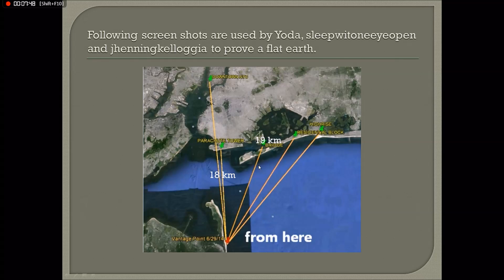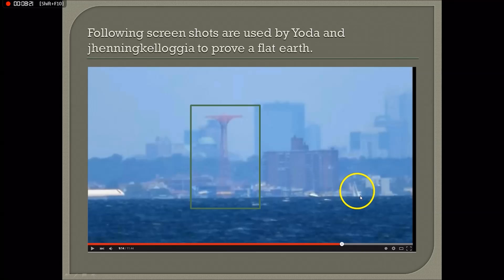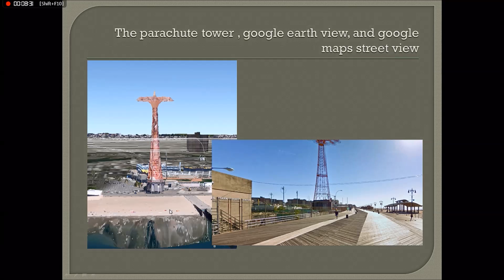Now let's look at the specific video they both use. The original maker showed where he is, pointed out a residential block, a parachute tower, and a bridge. Here you see the problem of blindly accepting video as proof — if they had looked more carefully, they would have seen a sailboat already behind the horizon, behind the curve. They should have also looked up that tower, because it stands on an almost six-meter-high concrete foot which is no longer visible.